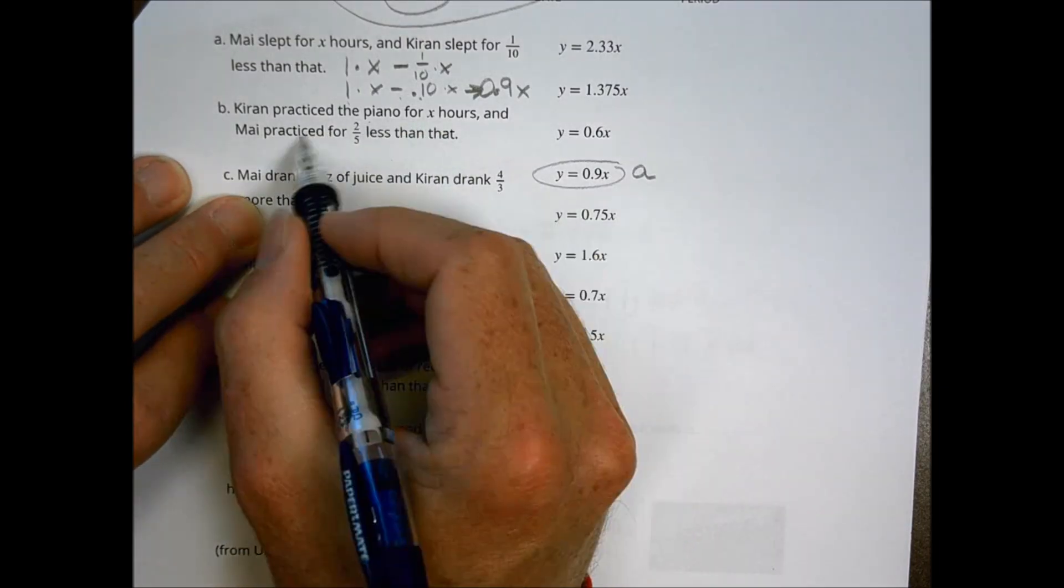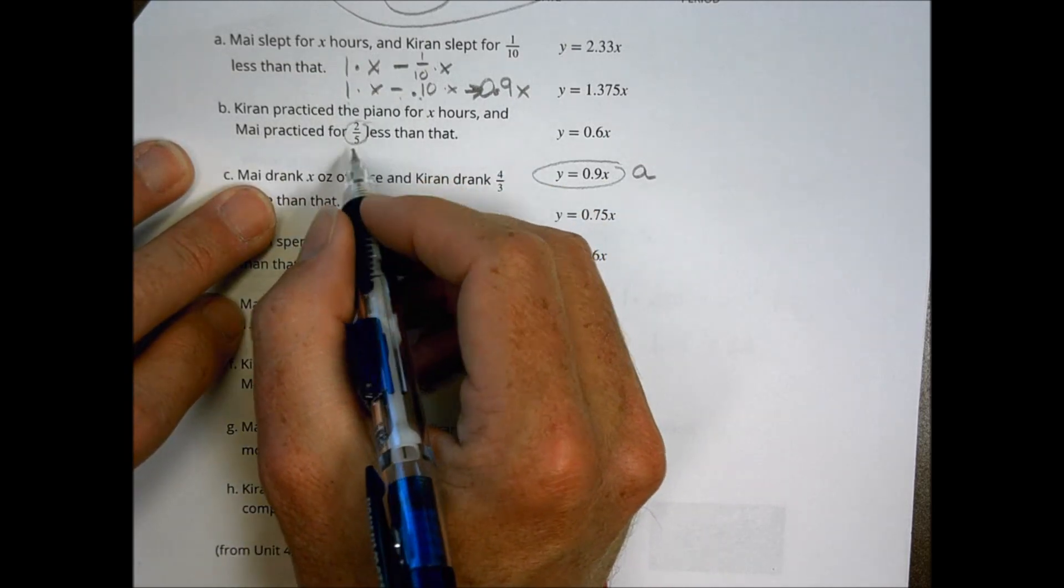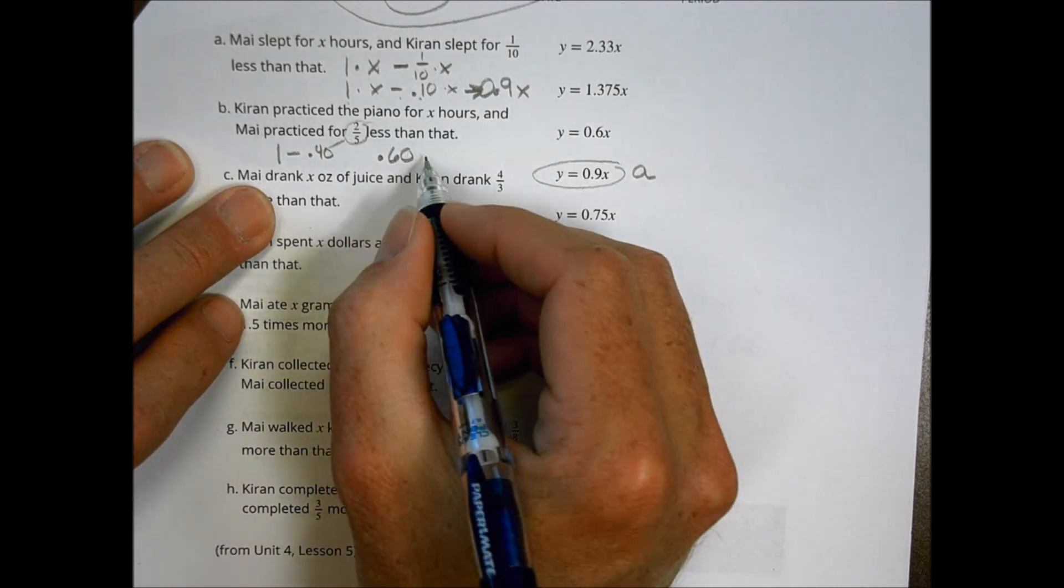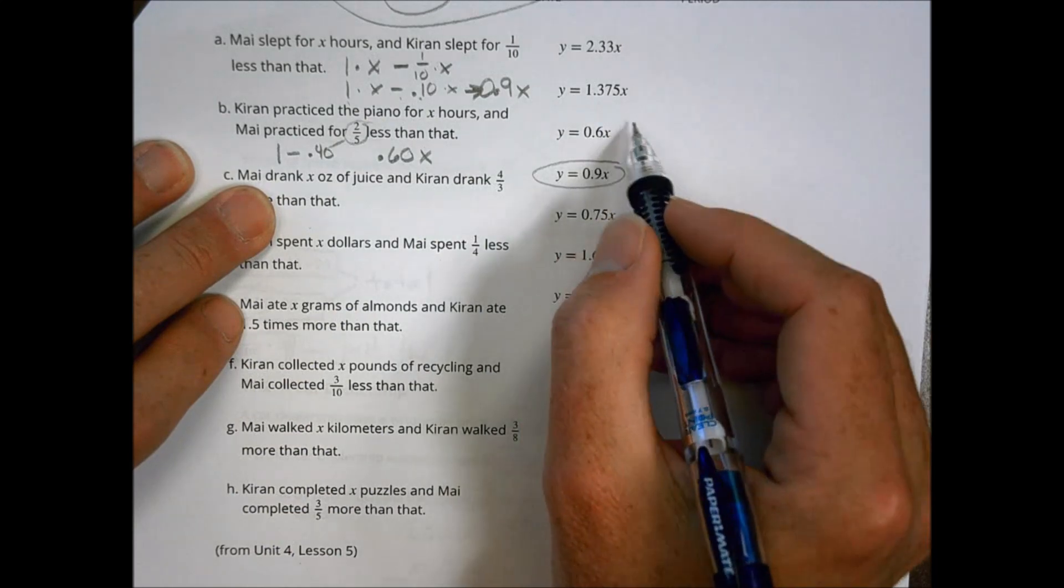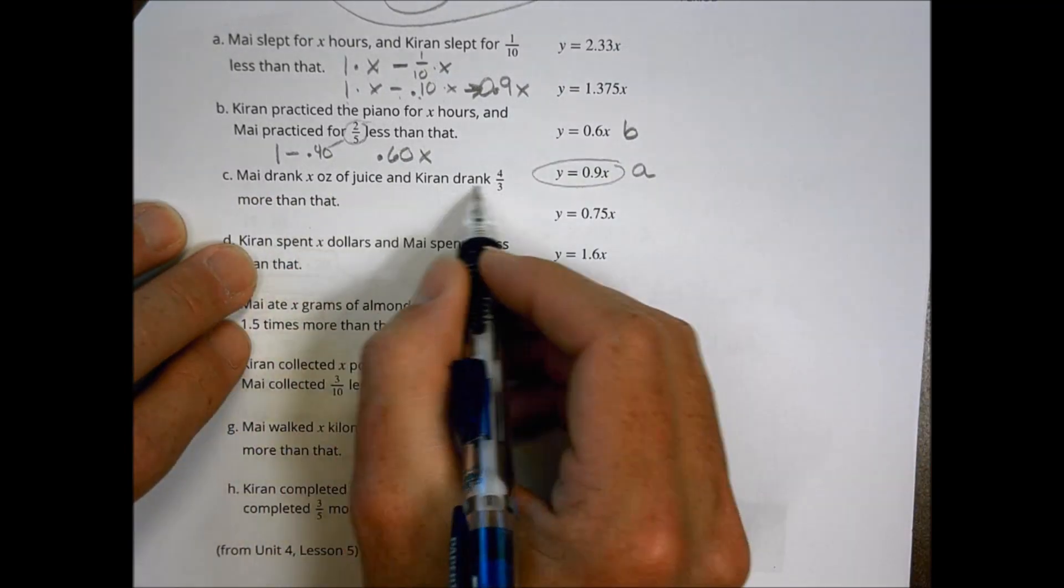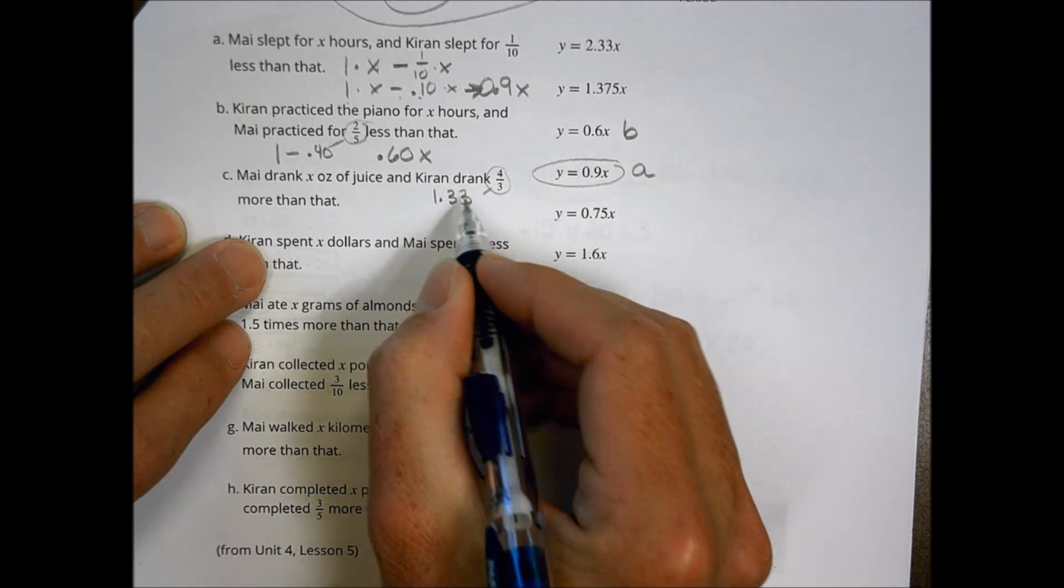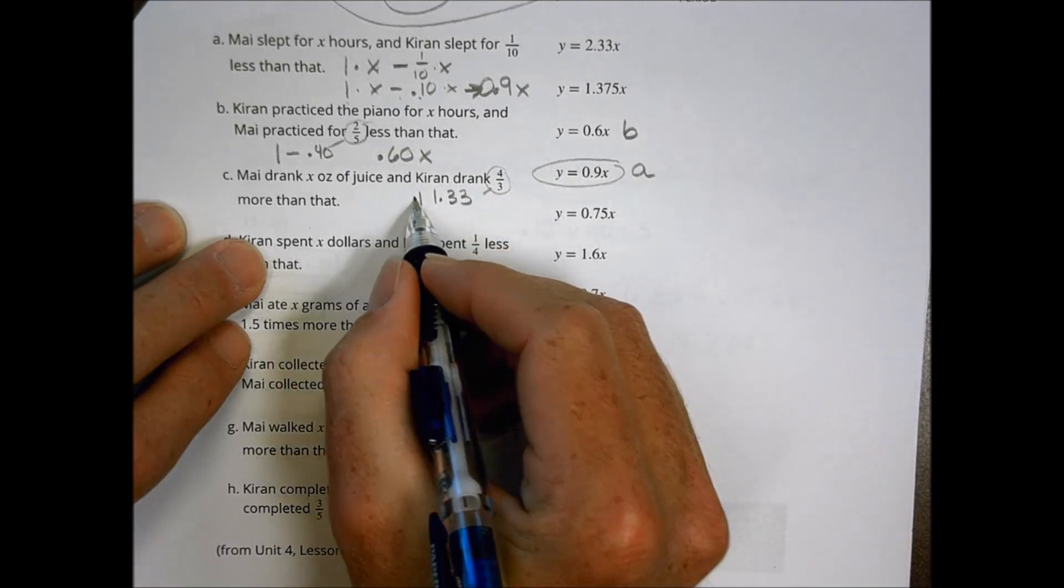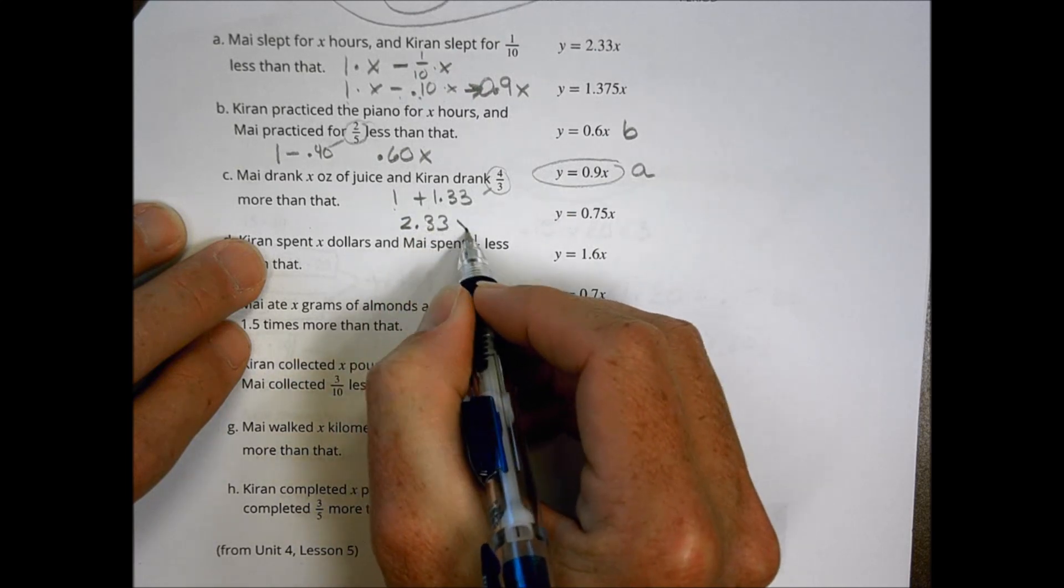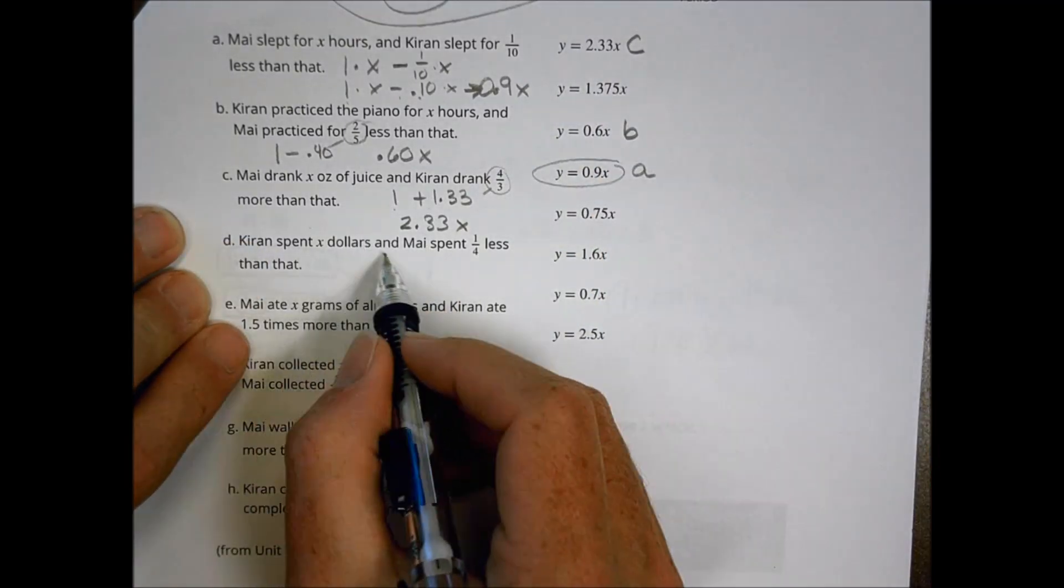Let's look at the next one. Kiran practices piano for x hours and Mai practiced for 2 fifths less, 2 fifths less. As a decimal, 2 fifths is the same as 0.40. So it's 1 minus 0.40, which is 0.60x. And that's going to match right here, 0.6, which is choice B. Mai drank x ounces of juice. Kiran drank 4 thirds more. So 4 thirds more. 4 thirds as the decimal is 1 point, and so repeating 1, 3, 3, it just goes on forever. But we have to add that to the original, which is 1. So 1 plus 1.33 is 2.33x. So looking at our choices, that matches this one right here, choice C. Kiran spent x dollars and Mai spent 1 fourth less. That's 0.25. So that's going to be 1 minus 0.25, which is 0.75x, which matches this one right here.